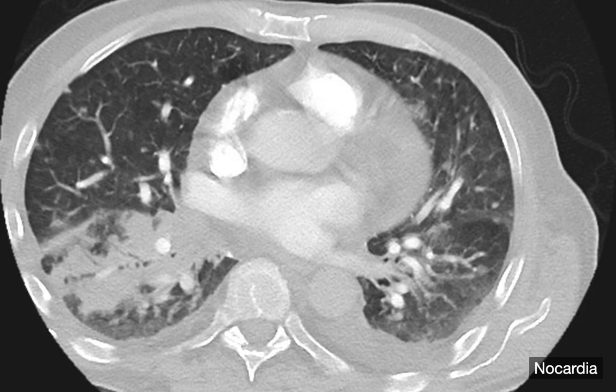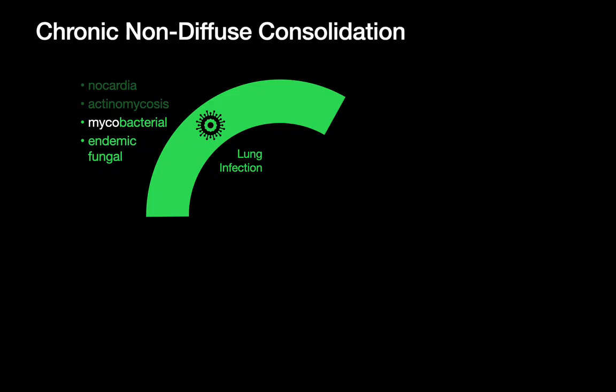When we encounter chronic non-diffuse consolidation, one of the three categories we need to think about are chronic lung infections: endemic fungal, mycobacterial, and — if you can remember them — nocardia and actinomycosis.